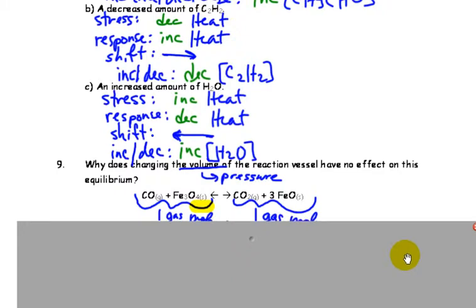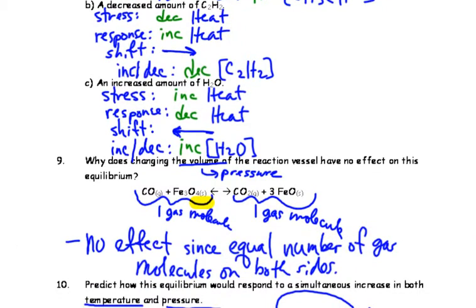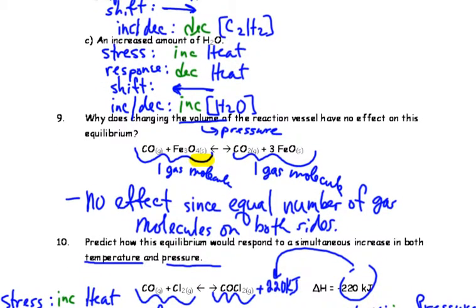Why does change in the volume of the reaction vessel have no effect? Change in the volume is the same thing as increasing or decreasing pressure. If we take a look at what we have here, we have a gas and a solid. We only include the gas: one on each side. So since there's an equal number of molecules of gas, there's no effect with pressure or volume changes.